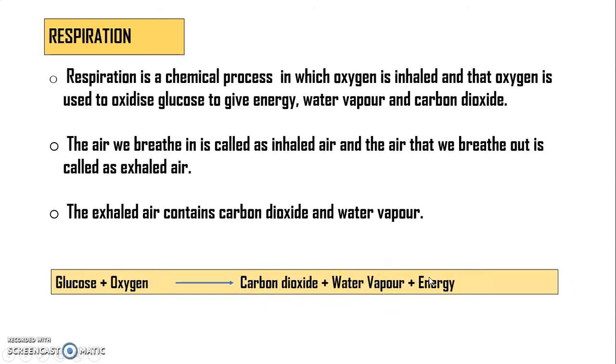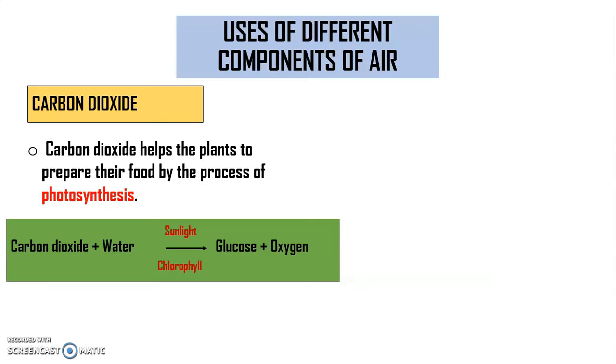So we are getting the energy. The carbon dioxide and the water vapor is the exhaled air. Now let's talk about carbon dioxide. Carbon dioxide helps the plants to prepare their food by the process of photosynthesis. Now what is photosynthesis? Photosynthesis is when carbon dioxide combines with water in presence of sunlight and chlorophyll to give glucose plus oxygen. Basically photosynthesis is a process by which plants prepare their own food.